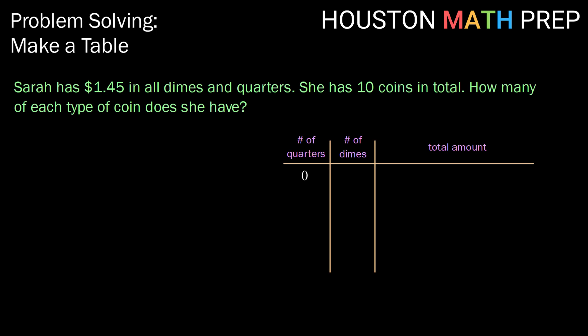So, we might start with, what if she has 0 quarters and 10 dimes? Well, how much would that make? Since she would have 0, 25 cent quarters and 10, 10 cent dimes, 10 times 10 cents gives her $1. So, we know that that combination does not work.